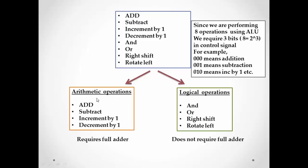Before designing the ALU, we first divide our operations into two categories: arithmetic operations and logical operations. Arithmetic operations require some addition, meaning they need a full adder — these include add, subtract, increment by one, and decrement by one. Logical operations do not require any addition, so they do not need a full adder. These are AND, OR, right shift, and rotate left, and can be done using only simple logic gates.